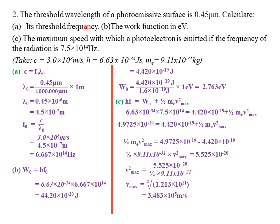To find the threshold frequency from c = f₀λ₀, divide both sides by λ₀: f₀ = c / λ₀ = (3.0 × 10⁸) / (4.5 × 10⁻⁷) = 6.667 × 10¹⁴ Hz (to four significant figures). This is the threshold frequency.